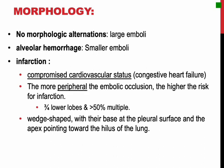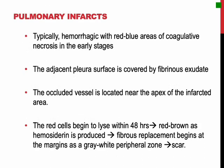Infarcts are wedge-shaped, with their base at the pleural surface and the apex pointing toward the hilum of the lung. Pulmonary infarcts typically are hemorrhagic and appear as raised red-blue areas of coagulative necrosis in the early stages. The adjacent pleural surface often is covered by a fibrinous exudate. The occluded vessel is usually located near the apex of the infarcted area. Red cells begin to lyse within 48 hours, so the infarct gradually becomes red-brown as hemosiderin is produced. Then fibrous replacement begins at the margins first, as a grey-white peripheral zone, and eventually converts the infarct into a scar.